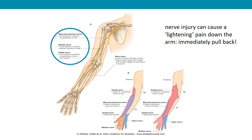Be mindful of the musculocutaneous nerve, which covers all muscles in the anterior compartment of the arm; the median nerve, which covers most flexors in the forearm and the thenar muscles in the hand; and the radial nerve, which covers all muscles in the posterior compartment of the arm. Patients who receive an accidental needle scratch to a nerve can experience a lightning pain down the arm, so if a patient complains of immediate shooting pain, pull back the needle and withdraw.